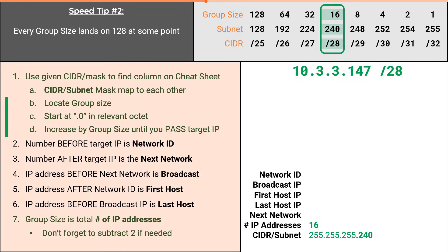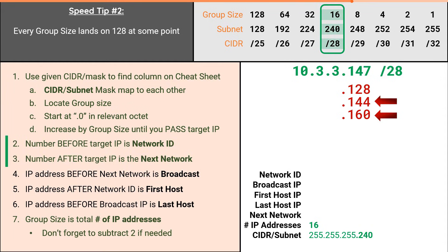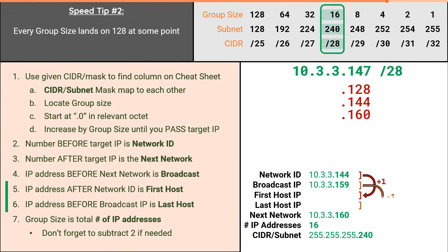Regardless of what you're using as your increment, every group size will at some point or another land on .128. Which means, if I'm solving for a target IP above .128, I don't need to start at .0 — I can simply start at .128 and continue incrementing by my group size from here. Our group size was 16, so we would continue with .144, then .160, and at this point we've passed our target IP. The numbers on either side of where our target IP would be are the network ID and the next network. The IP before the next network is the broadcast, and the first and last host are the IPs before and after the network ID and broadcast. Speed tip number 2 reveals that every increment will at some point or another land on .128.